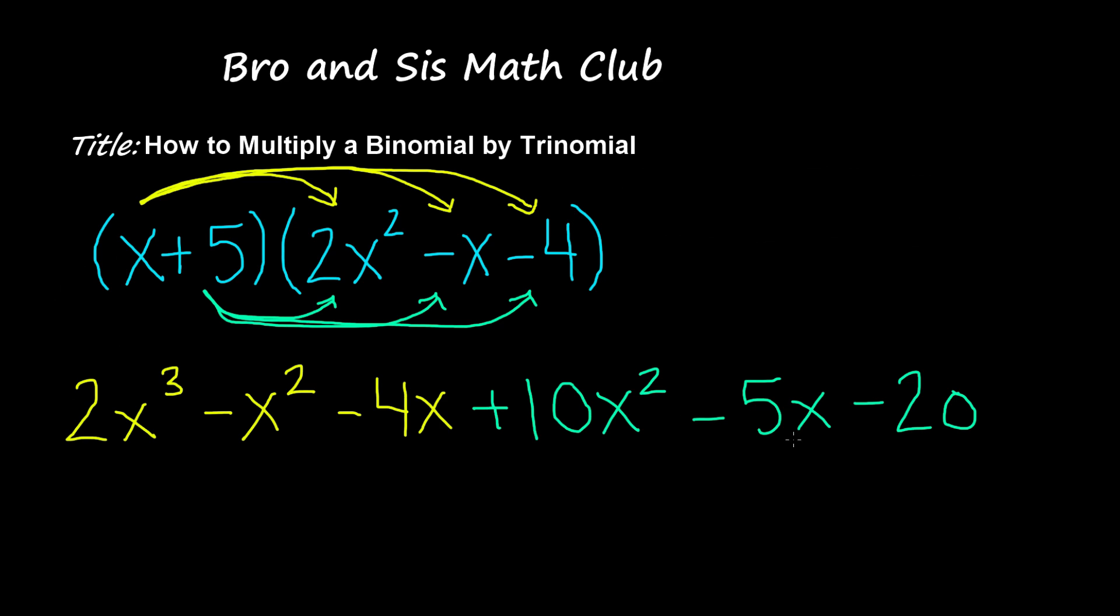Once we're done with that, now we take the like terms and we combine them. So the first term we have is 2x cubed. There isn't any other term that has the same variable in the exponent which is x cubed. So we're going to go ahead and write 2x cubed as it is.